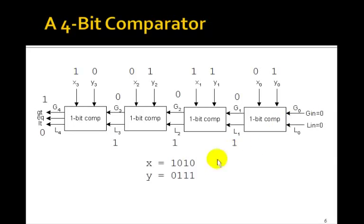So let's see how it works. Suppose you want to compare an x of 1, 0, 1, 0, that is 10, to y of 7. Well, x is greater than y, so we're going to end up with greater out here is going to be 1.